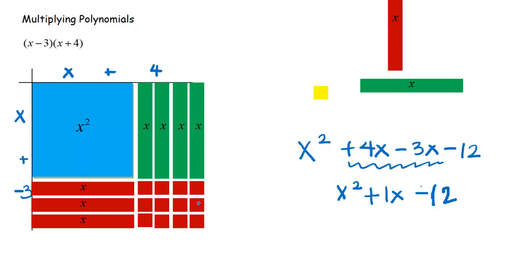That's the example using tiles. In the next video I'll show you how to do this without all these clunky tiles, because we don't want to use them every single time — we just use them as a foundation to understand where the math comes from. So when you think of x times x, picture that big blue square; x times four, picture the green rectangles; and the red ones are the negatives.